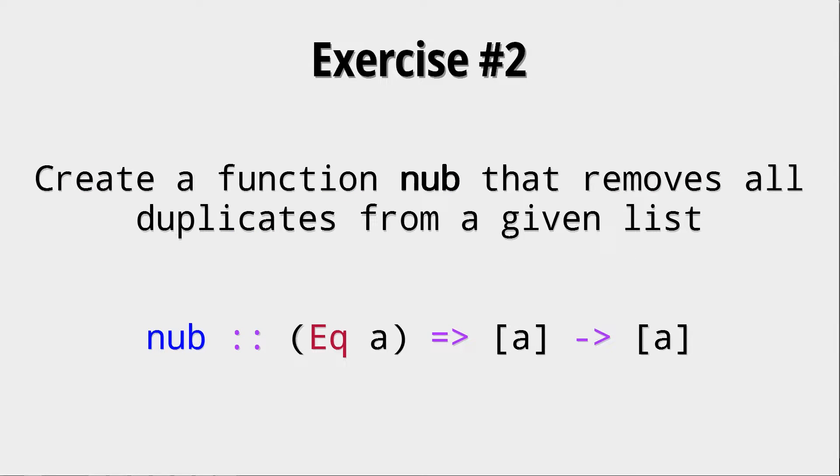Exercise 2: create a function nub that removes all duplicates from a given list. It's important that it's irrelevant in what order you remove duplicates. There is a function nub and a function elem in the data.list module. Don't use them. Make your own. How you do it is irrelevant. You can remove whatever duplicates you like from that given list. The order is irrelevant for this task. Okay, so pause the video now.